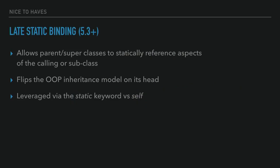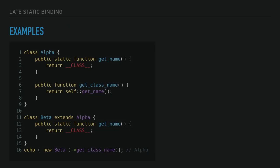Who in here has ever used late static binding in a project? Late static binding is a concept that throws object-oriented programming on its head — it allows the parent class to statically access things in extending subclasses. We have class Alpha and class Beta, which extends Alpha. Both define static methods. If you call Beta::get_class_name(), you'd get alpha, because on line 7 in get_class_name we're calling return self::get_name(). Because of inheritance in PHP, self is specific to the class it's defined in, so self always refers to Alpha. If you change the keyword from self to static, it allows the parent class to call a subclass method, so calling Beta::get_class_name() would now return beta.